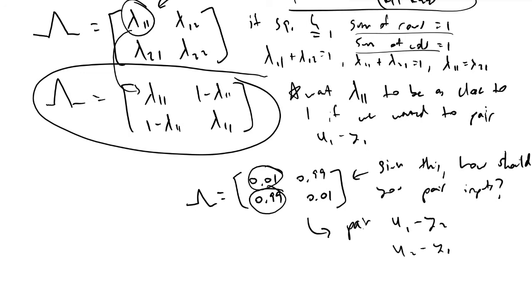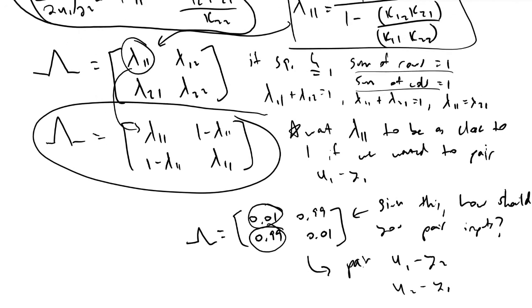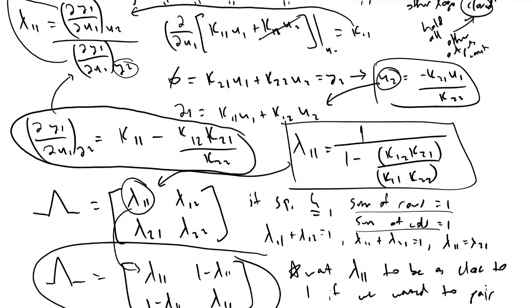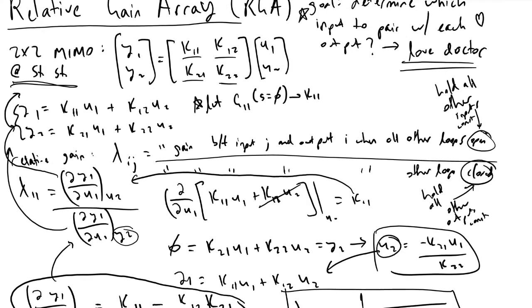This will help us out a lot when we're designing our controllers. This summarizes or concludes the relative gain array and its properties if we're working with the square matrix. I hope you guys find it useful. Let me know if you have any questions, and thanks for watching.